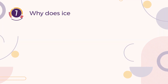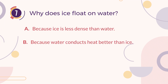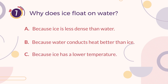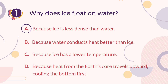Number 7. Why does ice float on water? A. Because ice is less dense than water. B. Because water conducts heat better than ice. C. Because ice has a lower temperature. D. Because heat from the earth's core travels upward, cooling the bottom first. The correct answer is A. Because ice is less dense than water.